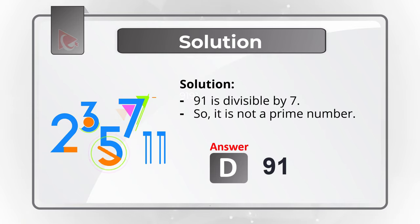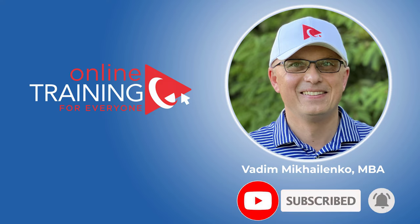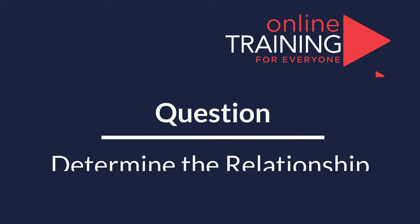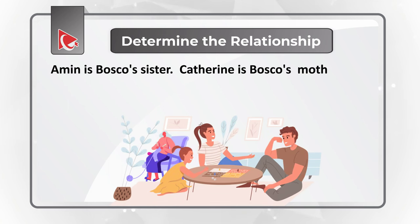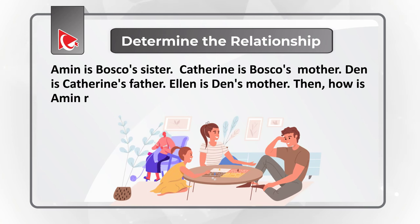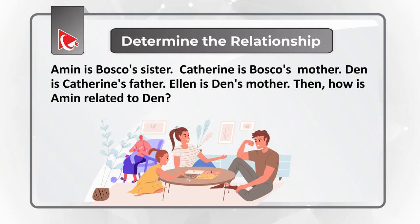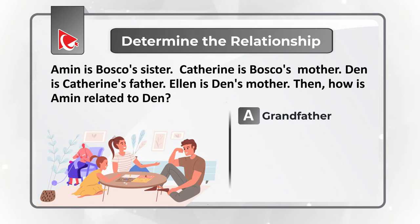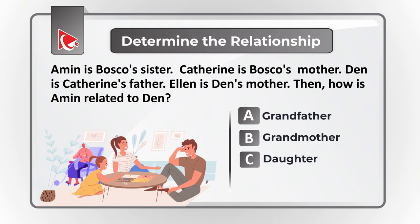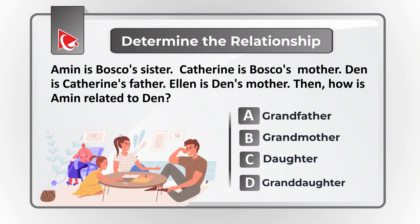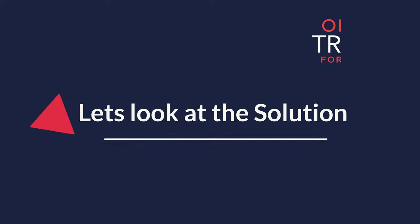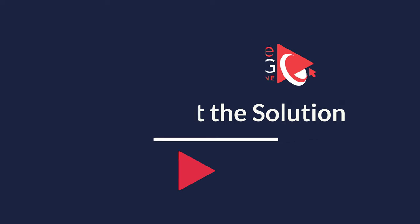Hopefully you've nailed this question and now know how to answer similar problems on the test. Here is an interesting challenge where you need to determine the relationship between family members. Amin is Baska's sister. Catherine is Baska's mother. Dan is Catherine's father. And Alan is Dan's mother. You need to determine how Amin is related to Dan. You have four choices: Choice A, grandfather; Choice B, grandmother; Choice C, daughter; and Choice D, granddaughter. Give yourself a little bit of time to navigate this puzzle. Ready or not, I am going to move forward and reveal the answer.